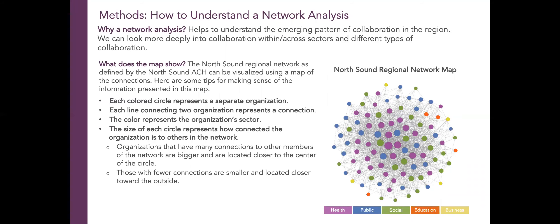The image to the right is the final North Sound regional network map. This map visualizes what we learned about the connections in our region from the network analysis. Each colored circle represents a separate organization. The color represents the organization sector and the size of the circle represents how connected the organization is within the network. Organizations with many connections are larger and closer to the center, while those with fewer connections are smaller and located on the outside. The lines connecting two circles represent a connection.